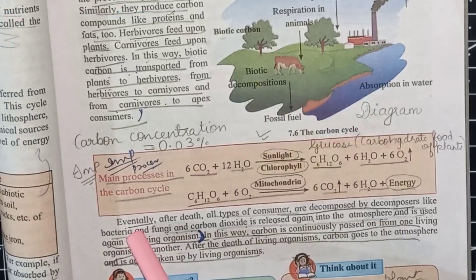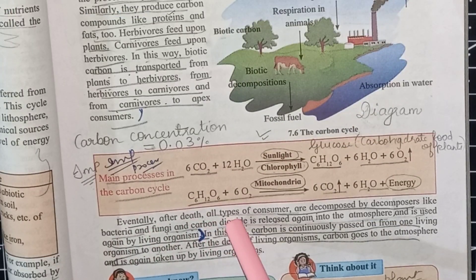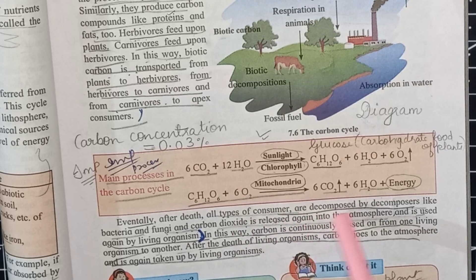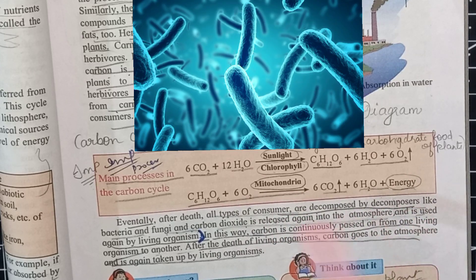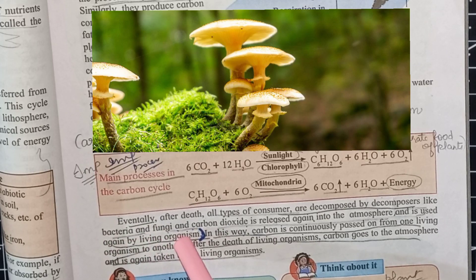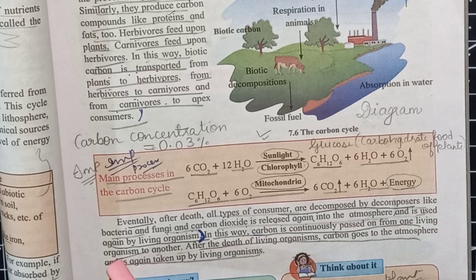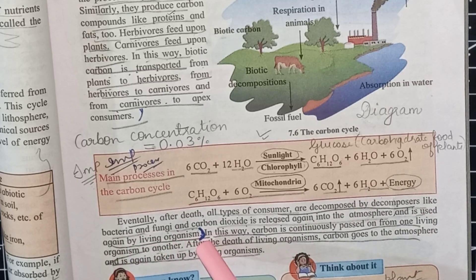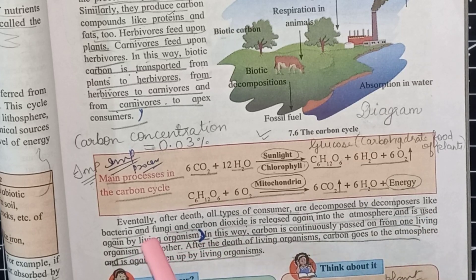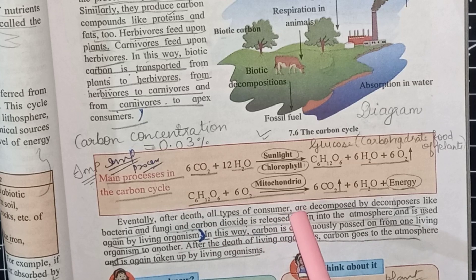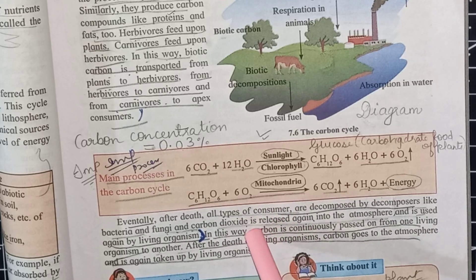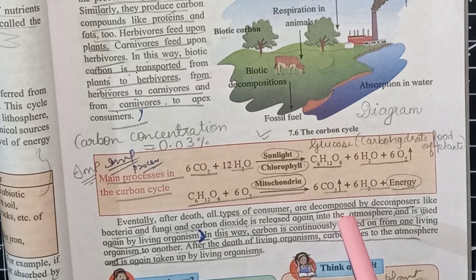Eventually, after the death of all types of consumers, they are decomposed by decomposers like bacteria and fungi, and carbon dioxide is released again into the atmosphere and used again by living organisms.